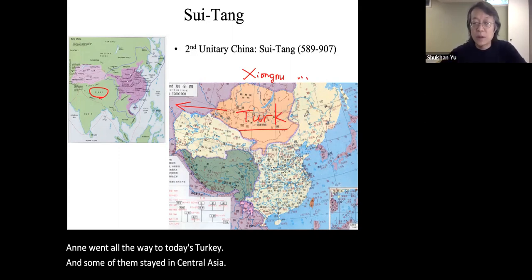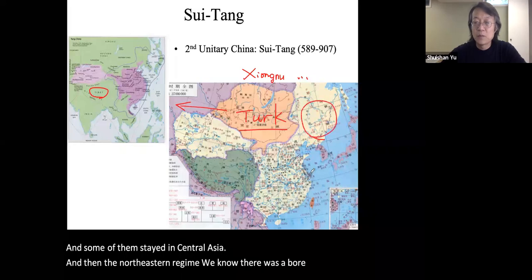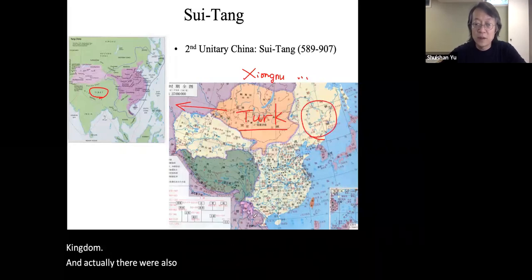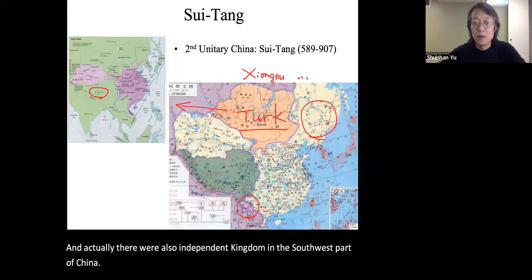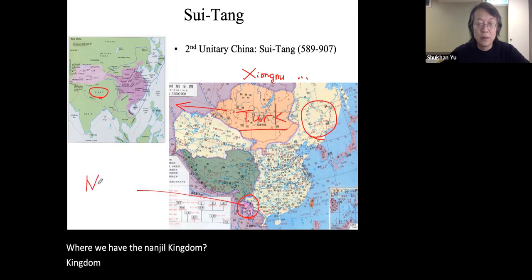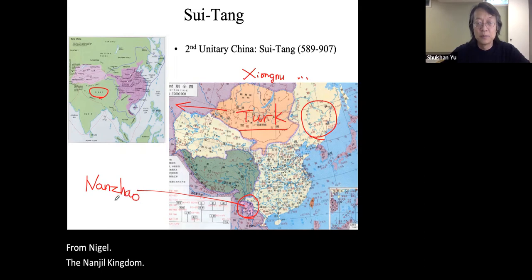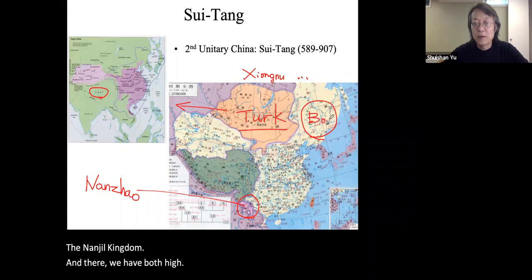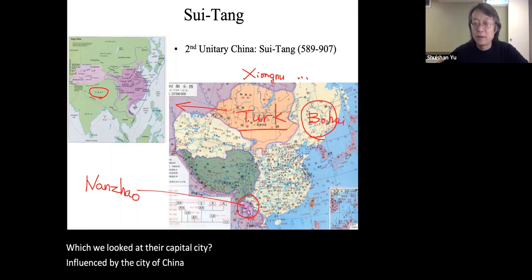In the northeast there was the Bohai kingdom, and in the southwest there was the independent Nanzhou kingdom—we will look at a building from Nanzhou. Bohai's capital was influenced by the city of Chang'an. There was also Japan, and we looked at Hanyankyo.